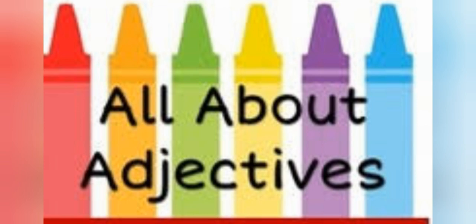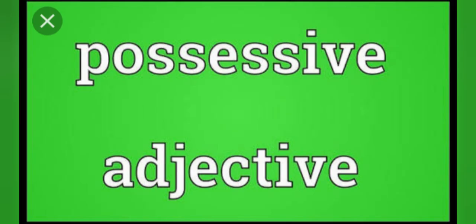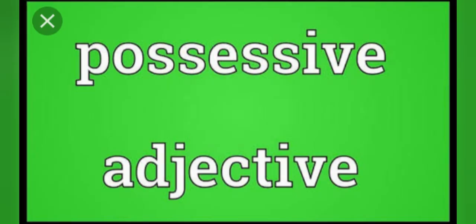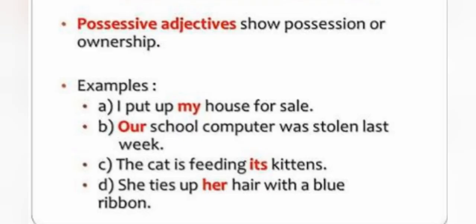Today we will discuss about possessive adjective and demonstrative adjective. So let us begin with possessive adjectives. Possessive adjectives are those adjectives that are used before nouns to show position — jo nouns ke pahle aate hain, position means ownership dikhane ke liye. Aur possessive pronouns mein kya bataya tha? That are used in place of the noun they represent.